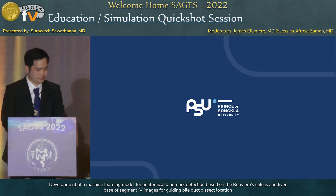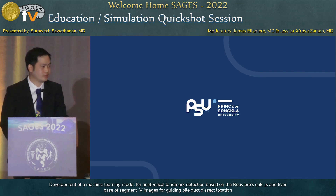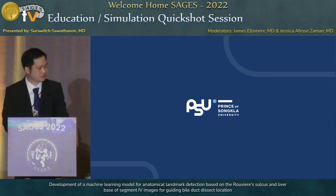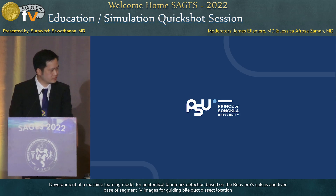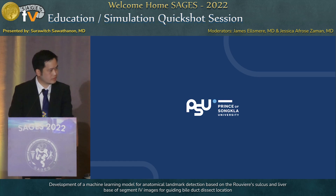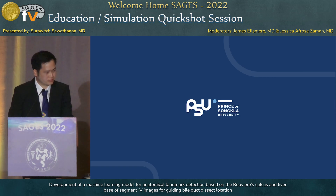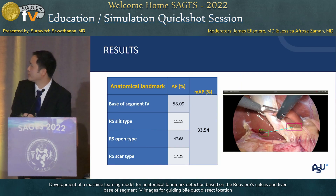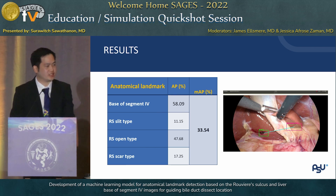That's really incredible. So the system is actually performing right now? Yes, we deployed it in our operating room to guide surgeons and residents performing laparoscopic cholecystectomy. What happens when the computer can't identify the landmarks? The accuracy is about 33.5 percent for the AI to detect both Rouvière's sulcus and liver segment 4. If it cannot identify them, we don't show any line or any box.